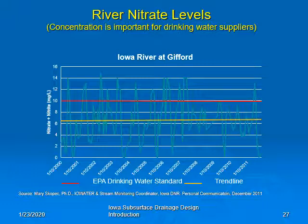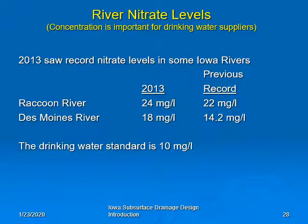Of course, if there's a water supply system that takes water from the river, they're going to have problems anytime those concentrations get over 10 milligrams per liter. Many of you probably remember that 2013 saw record nitrate levels in some Iowa rivers. Des Moines takes its drinking water from the Raccoon and Des Moines rivers, and 2013 saw much higher nitrate levels than even the previous record — over twice the drinking water standard. These record high nitrate levels meant that the Des Moines Water Treatment Facility had to remove nitrates at a cost of over $7,000 per day, affecting nearly 500,000 people who utilize that supply.